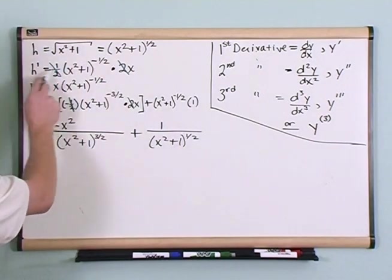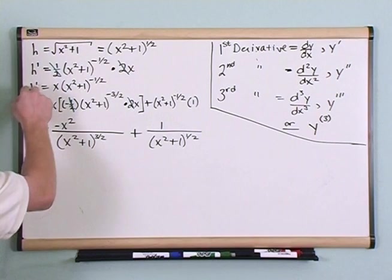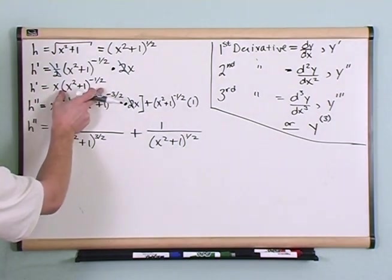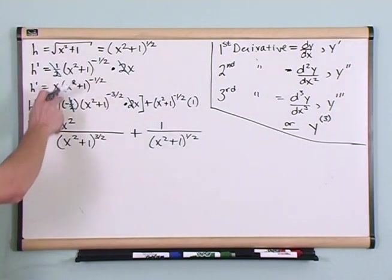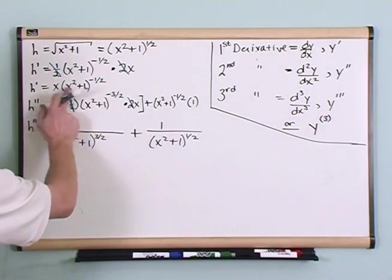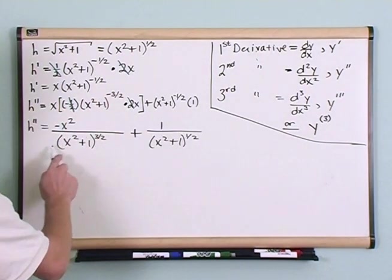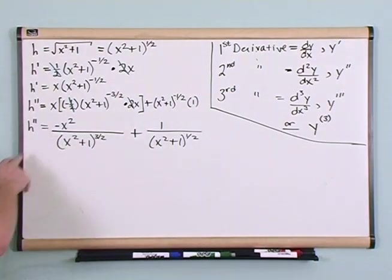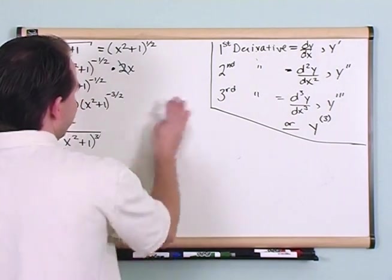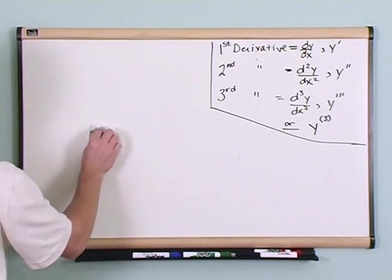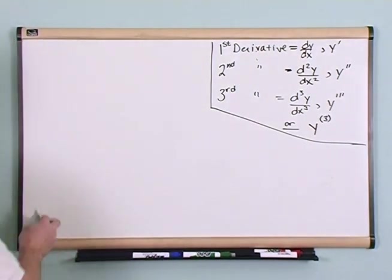You take the original function, take the first derivative and simplify. Then take another derivative of that — in this case using the product rule — and we also needed the chain rule to get the derivative of the second term. You could simplify this fraction further by getting a common denominator. Essentially that's the big picture process for higher derivatives. The acceleration is a higher order derivative of the position function, for instance.